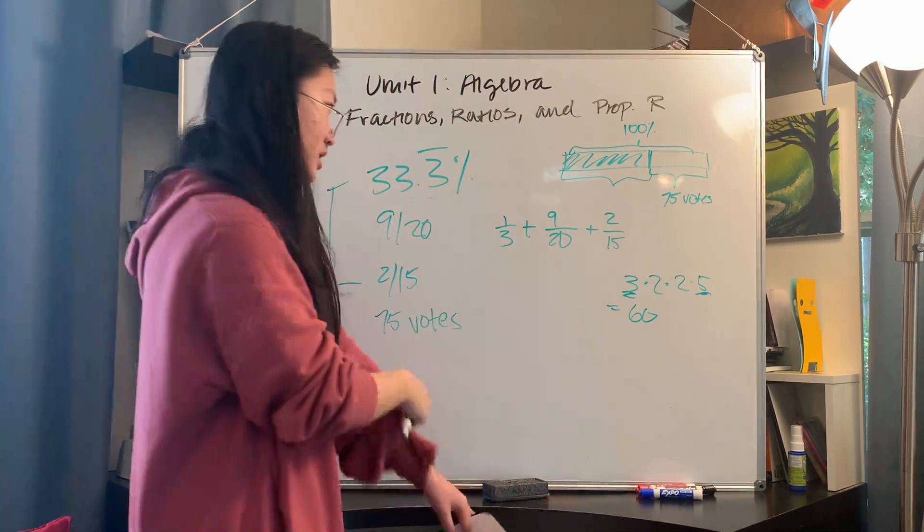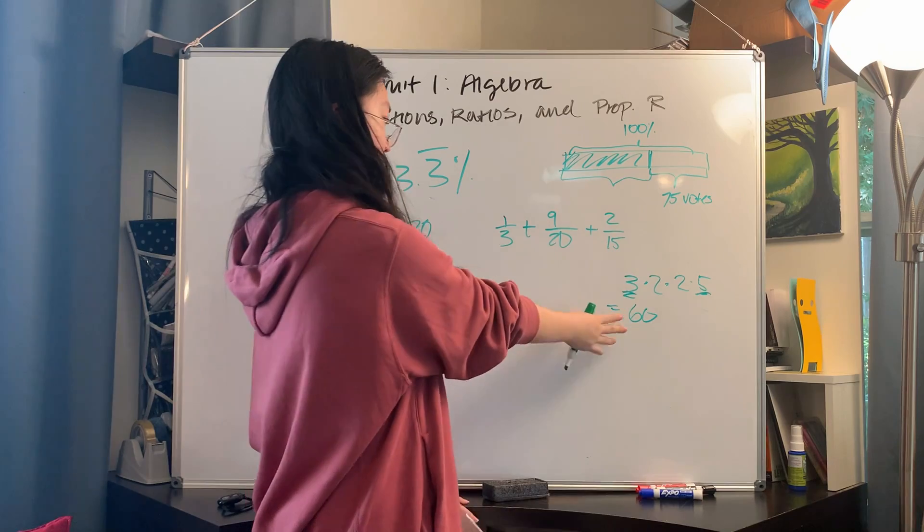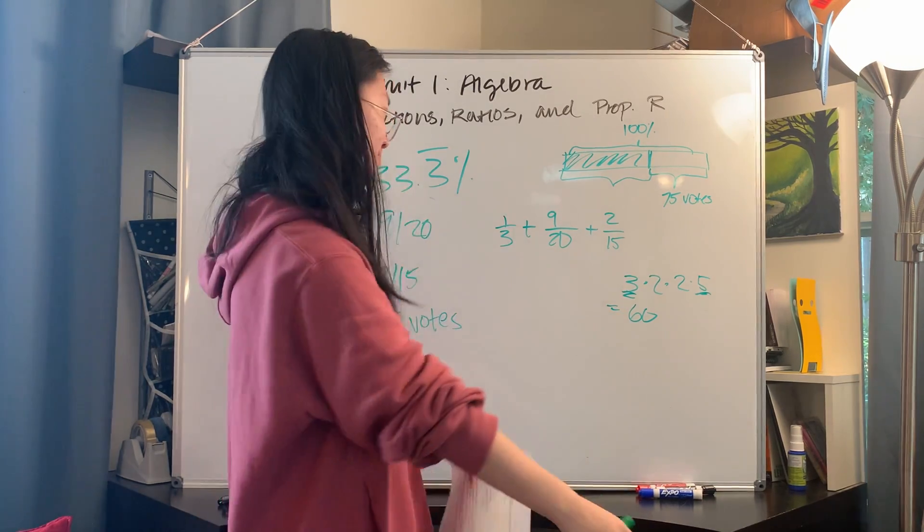So what number is that? That number is 2 times 2 is 4, times 5 is 20, times 3 is 60. We're going to make all of these numbers have a denominator of 60 before we can add them together.